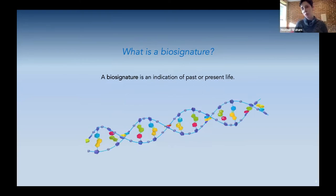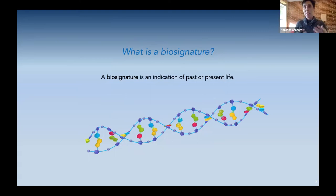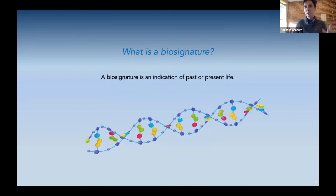A biosignature can also be very complicated — we can think of complicated molecules that are really hard to imagine manufacturing abiotically. These are very potent examples of biosignatures that can tell us something about the contemporaneous nature of whatever life we think we are looking for when we see this biosignature.